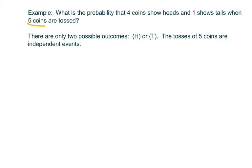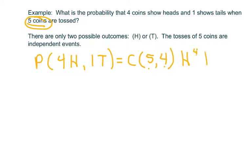So the way we set it up is the probability of four heads and one tail. So what you're going to do is you're going to write the combination of, because we're tossing five coins, so we're taking four coins, we want four heads out of the five. And we're gonna write heads to the fourth power and tails to the first power.